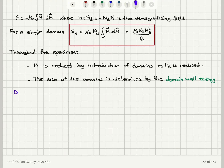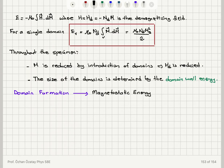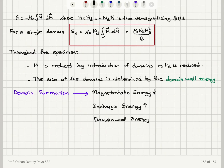We can summarize the energy consequences of domain formation as follows. When we form domains inside a ferromagnetic, ferrimagnetic, or antiferromagnetic material, there are three important energy terms. Magnetostatic energy — the one we're trying to minimize — is reduced. Exchange energy, which favors single domain structure with parallel alignment of moments, will increase. And domain wall energy will also increase. We will talk about domain walls in more detail later.